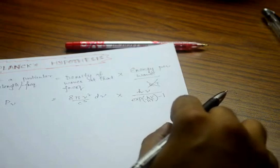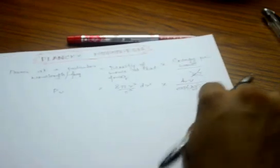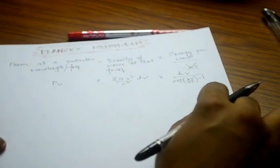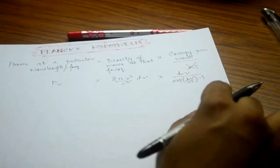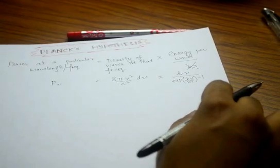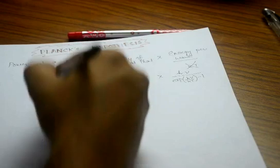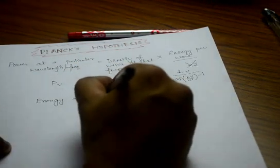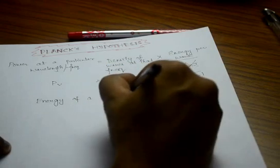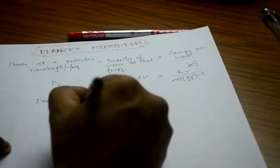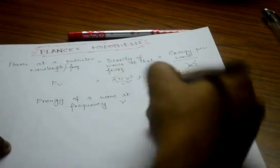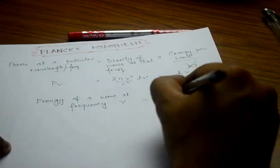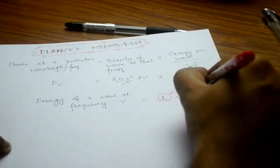Now before I come to this, I should have told you something. And which is this: it says that the energy of a wave at frequency nu is given by a constant h and then nu itself. This h is called Planck's constant.